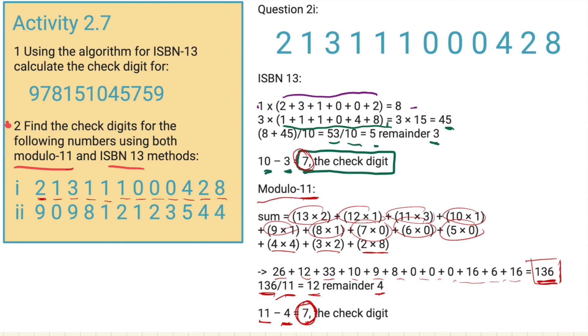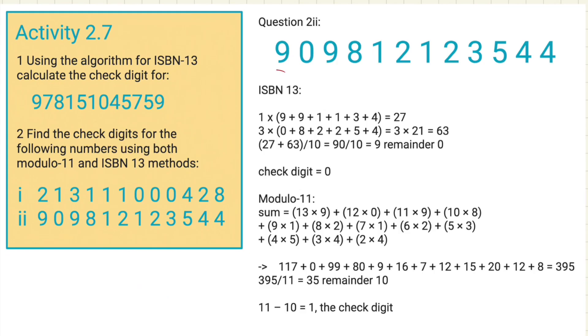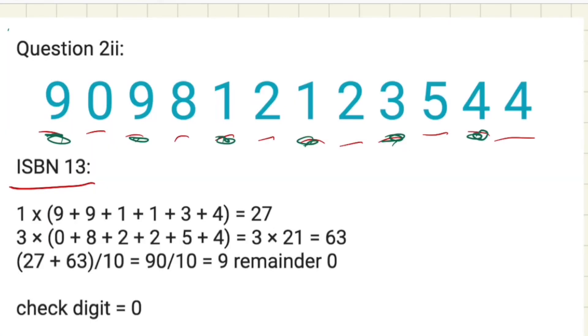This isn't always the case. Now, if you want to have a little go, based on what you can see here, if you want to have a little go at that one, the next one, that's fine, and pause the video. If not, I'm going to show you how that works right now. This time we have the number 9, 0, 9, 8, 1, 2, 1, 2, 3, 5, 4, 4. ISBN-13, just to remind you, we're going to times the odd numbers by 1, and we're going to times the even numbers by 3. So we end up with a total here of 27, and we end up with a total in the bottom multiplied by 3 of 63.